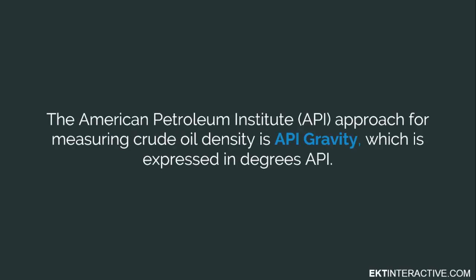Now, scientists usually measure the density of a liquid using specific gravity, which is the weight of the liquid divided by the weight of the same volume of water. However, the popular approach in the oil industry, defined by the American Petroleum Institute, or API, for measuring crude oil density is API gravity,